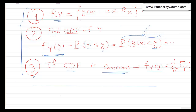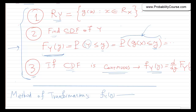This is a very general methodology and it should work for any problem. But today I want to talk about another method that is sometimes useful and sometimes easier to apply. This method is called the method of transformations. The idea is that we find the pdf of y directly from the pdf of x — we don't go through the cdf.